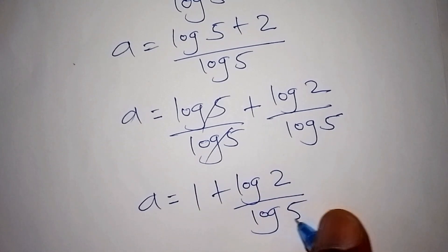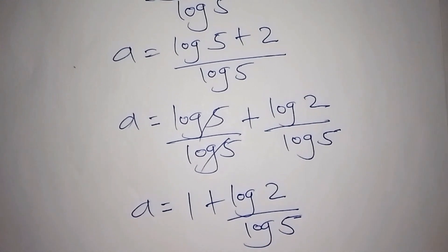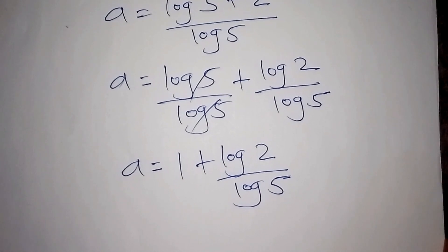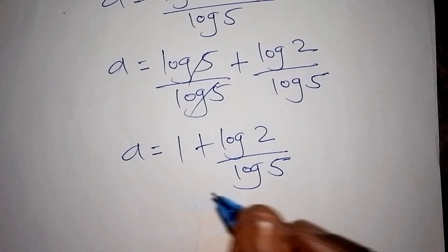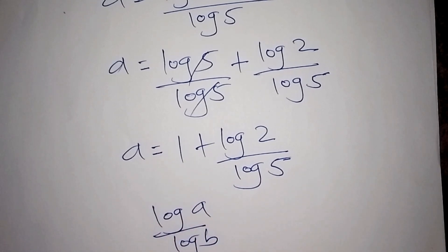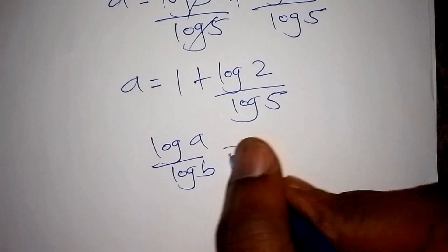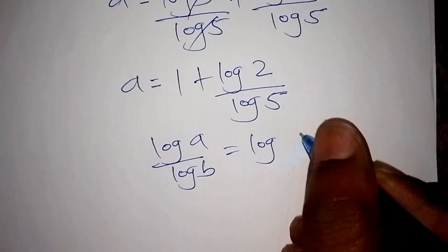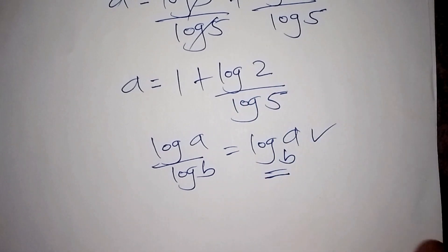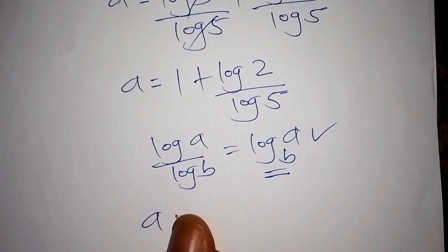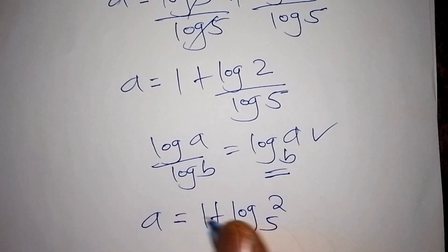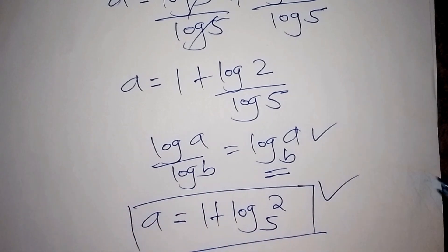Now, log a over log b can also be written as log of a to the base of b. So we convert log 2 over log 5 into this form. Our final answer is a equals 1 plus log of 2 to the base of 5.